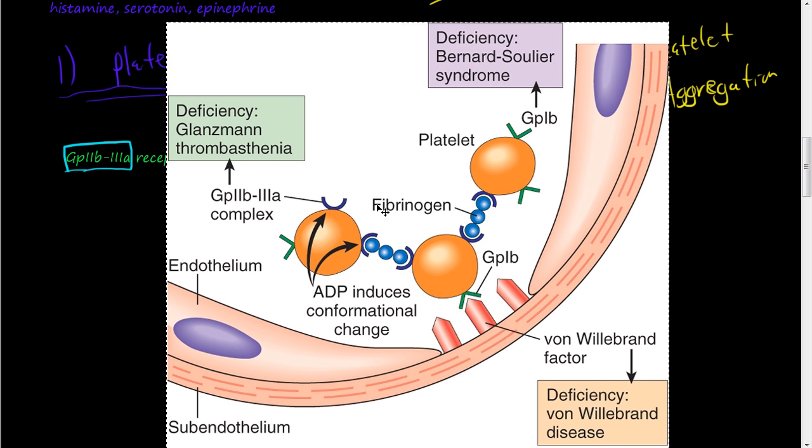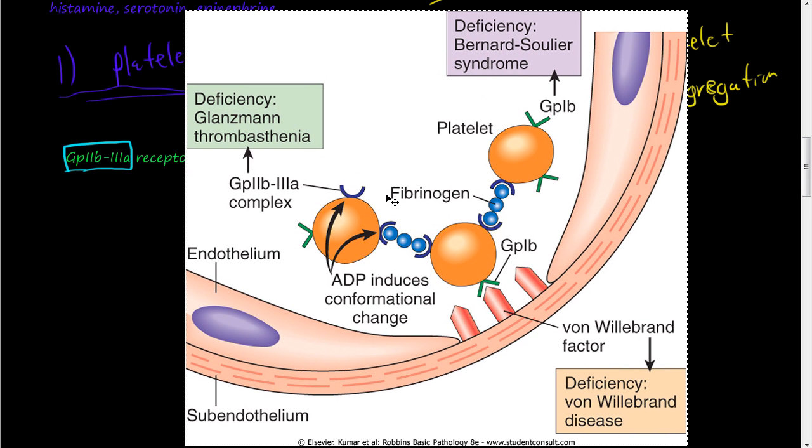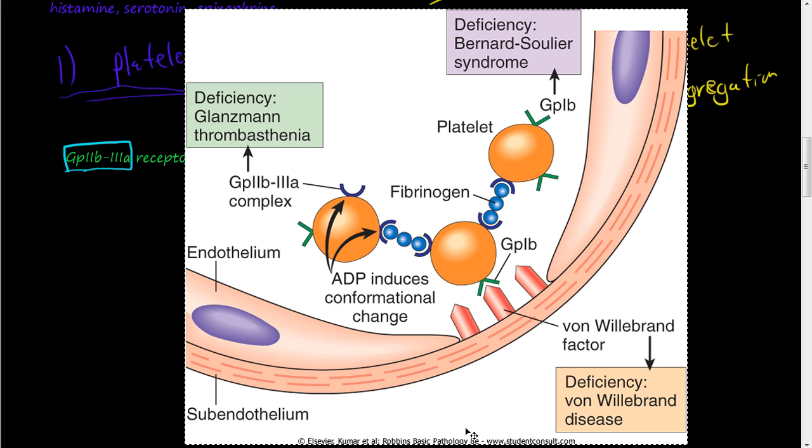So this picture here is taken from Robbins Basic Pathology, 8th edition. And it shows this kind of this process that we've been describing here. So under this endothelium, when you have a hole here, under this subendothelium or the extracellular matrix,